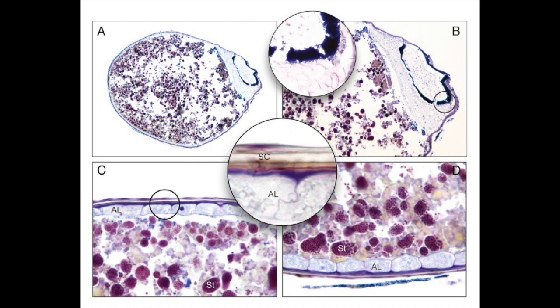The sections were cut approximately at the center of the seed. An intact seed coat and endosperm are shown in the central part, and the embryo appears on the right pole.